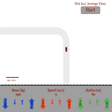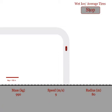So with wet ice and average tires, it's going to be a pretty precarious situation. We hit the start button and at only 9 meters per second, we can see that our car is slipping off of the roadway.